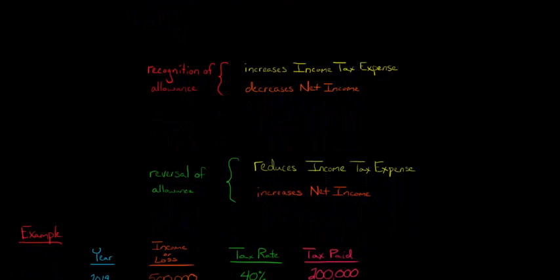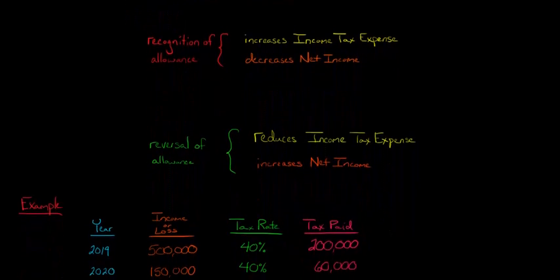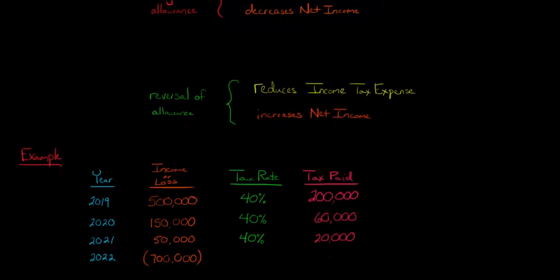I want to show you the journal entries and how this would play out. This would be a good review if you're still uncertain about how Deferred Tax Asset Valuation Allowances work. Let's say there's a company with four years of financial data. They have $500,000 in 2019, then $150,000 and $50,000, and then a $700,000 loss in 2022.